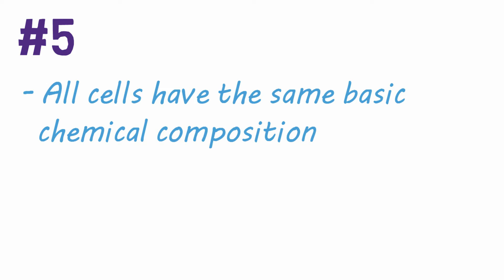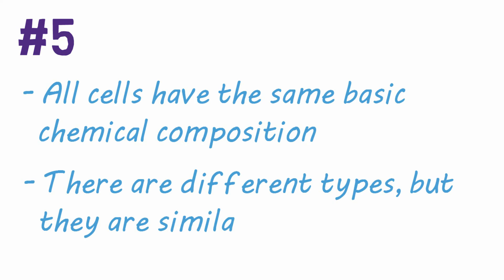Number five, all cells have the same basic chemical composition. Yes, there are many different types of cells with vastly different functions, but at their core, they are all very similar. Just like people, cells are far more alike than they are different. You can watch my video on cell anatomy to learn about the basic structure of all cells.